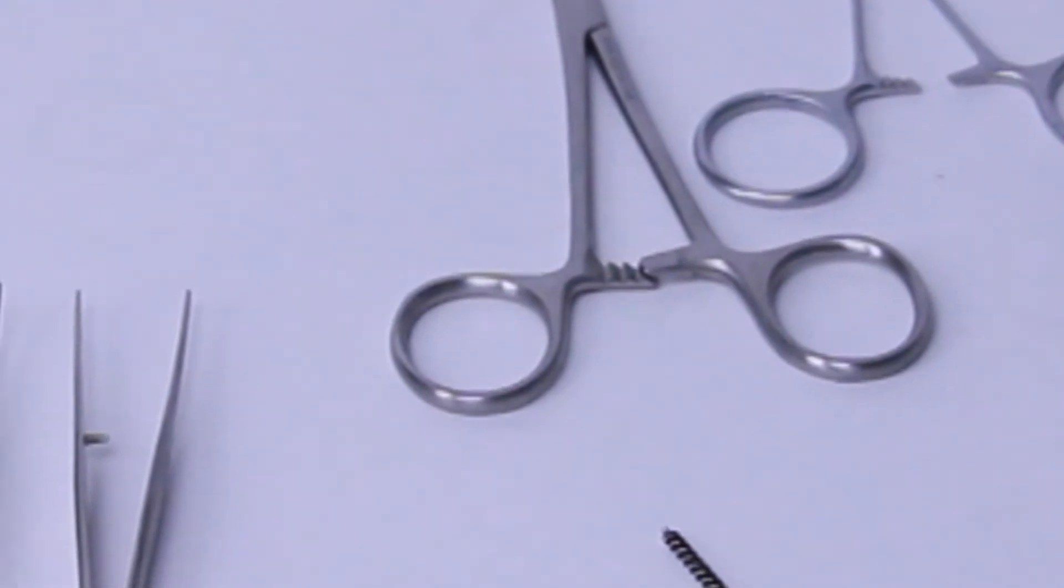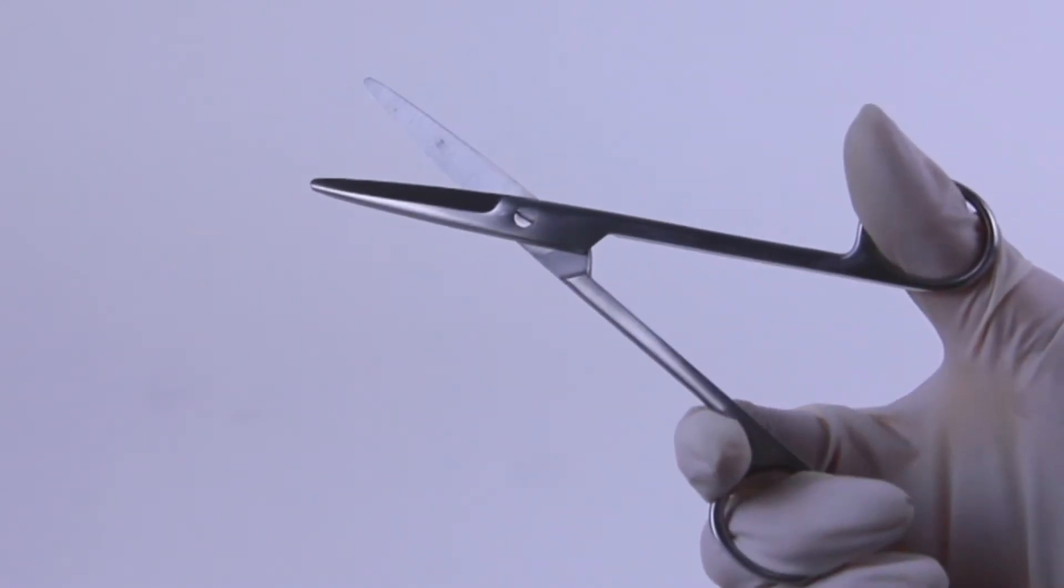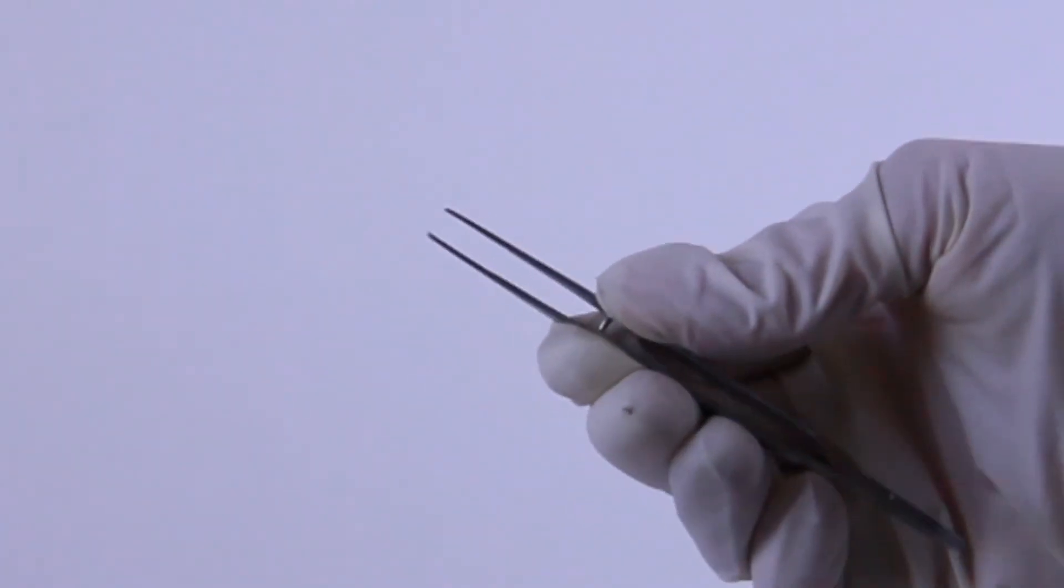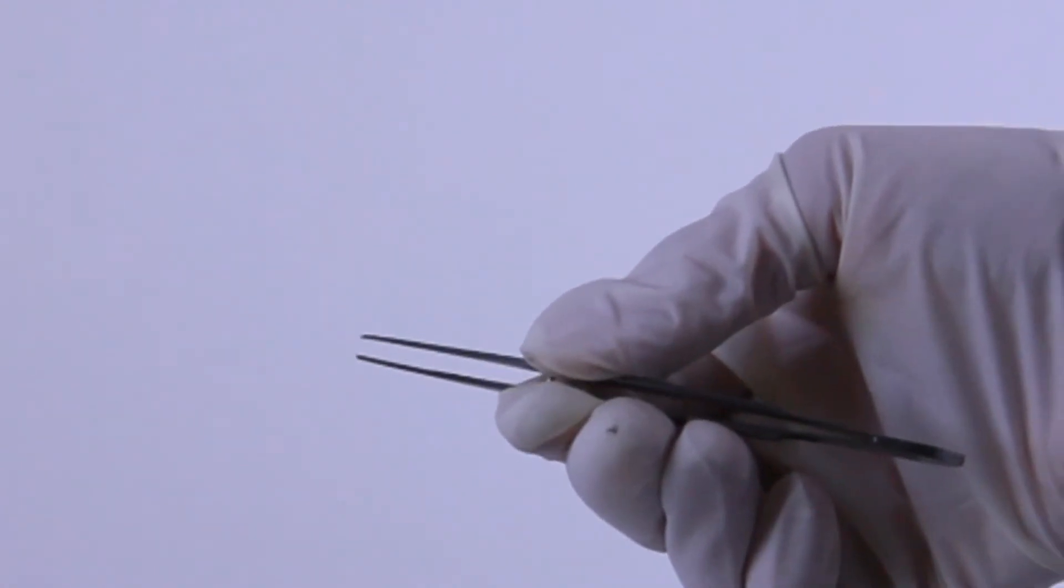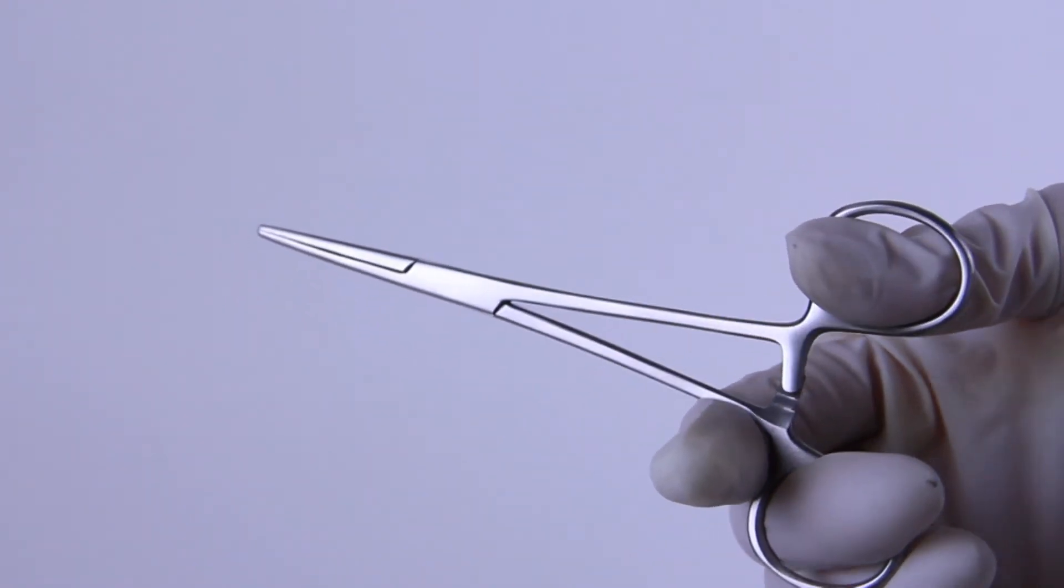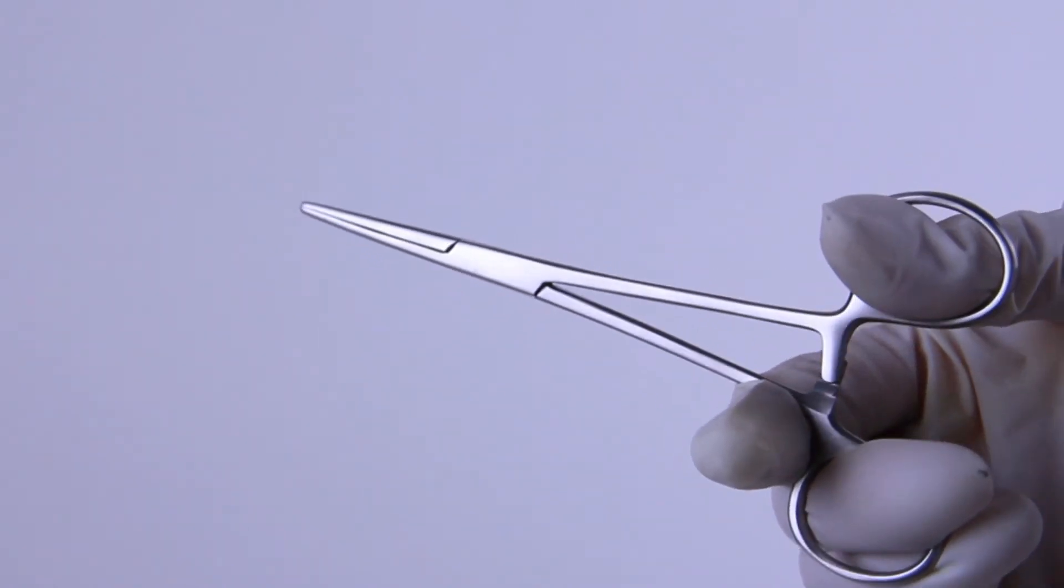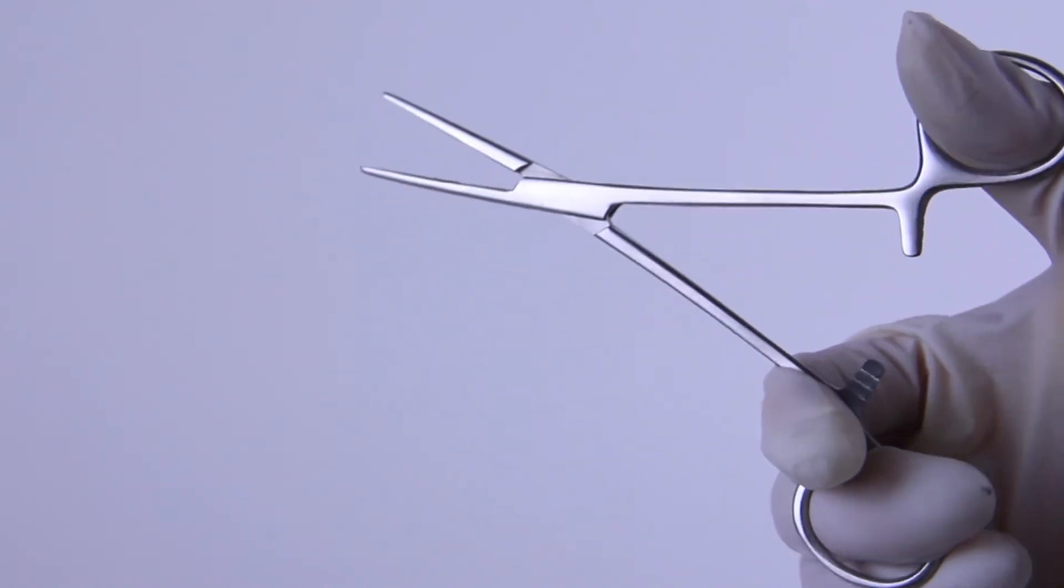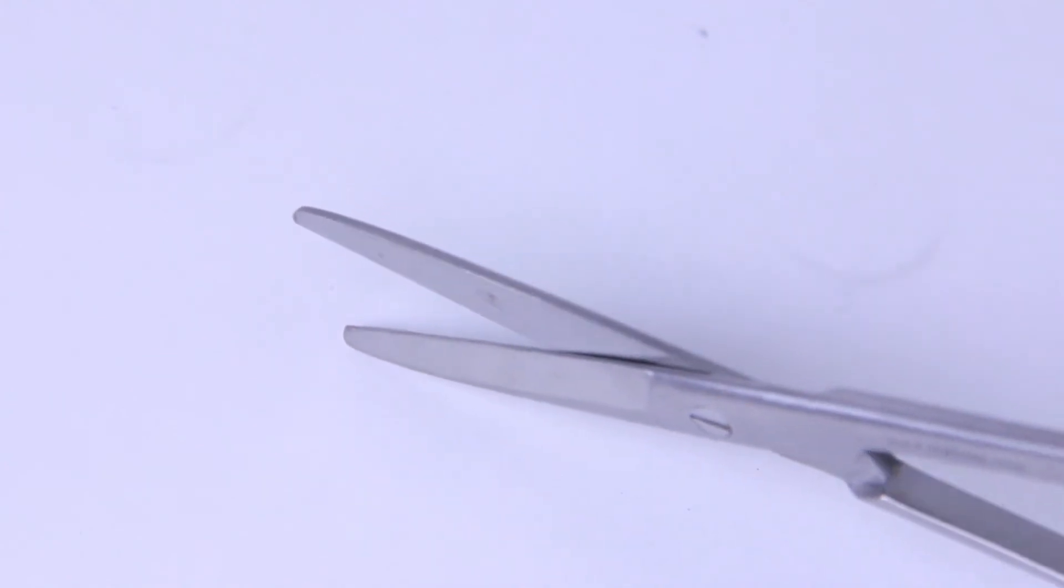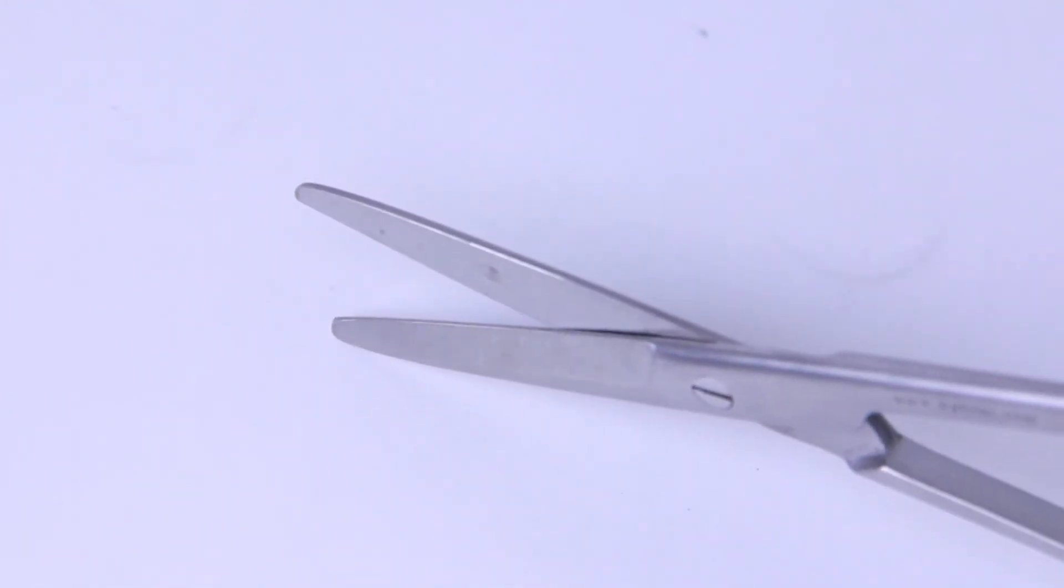Inspect each instrument for proper function and condition. Scissor blades should glide smoothly, and the blades must not be loose when in closed position. Check that forcep tips are properly aligned. Hemostats and needle holders should not show light between the jaws. They should lock and unlock easily, and the joints should not be too loose. Check needle holder jaws for wear. Examine cutting instruments and knives to be sure their blades are sharp and free of nicks and chips.